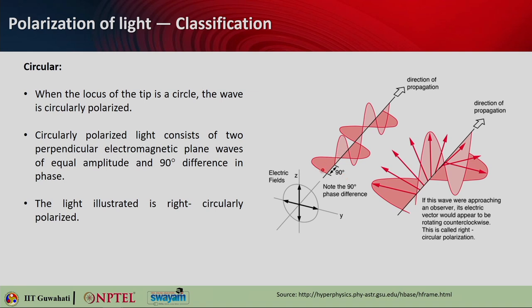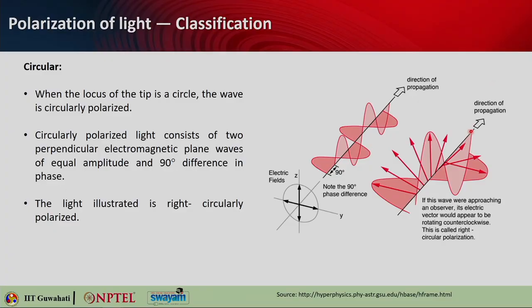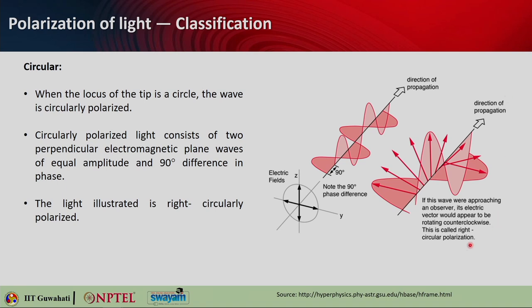There are two plane waves adding up with a phase difference of 90 degrees. You will see that this is how the electric field vector moves when the wave is propagating — it goes like this while propagating forward. This is the direction of propagation. If you stand as an observer and see that the wave is coming towards you in a counterclockwise manner, you will call it right circular polarization. If the phase difference is the other way, the vector rotates in the opposite direction and that will be called left circularly polarized.